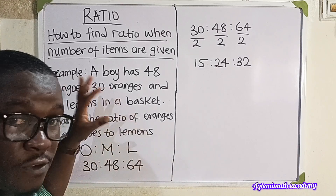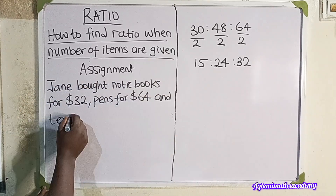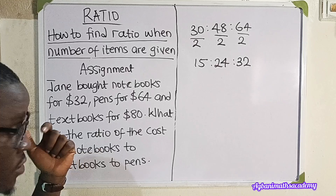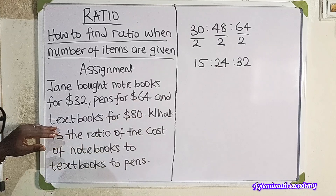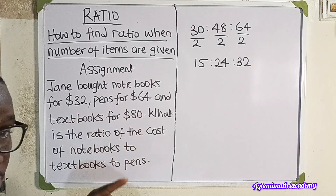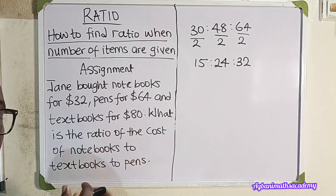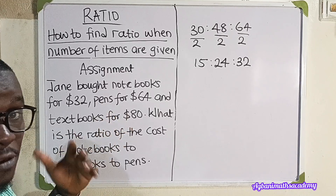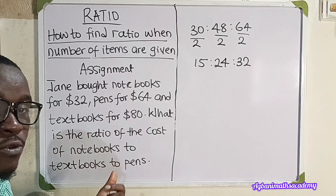Next, I'm going to drop the assignment for this section. Jane bought notebooks for $32, pens for $64, and textbooks for $80. What is the ratio of the cost of notebooks to textbooks to pens? Solve this along with the assignment from section one. Leave your answers as a comment in the comment section if you're not in the WhatsApp group. Now let's go to the third section.